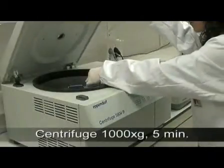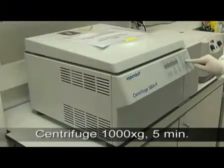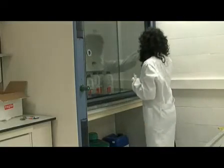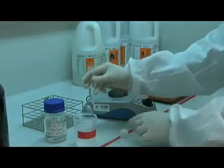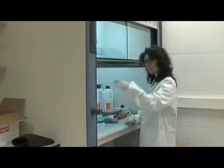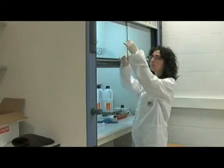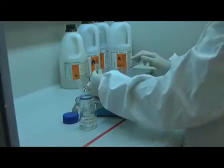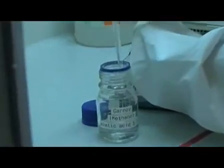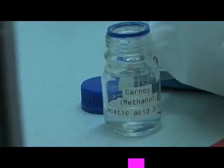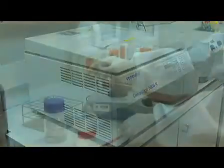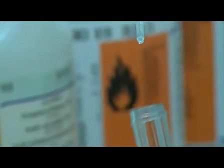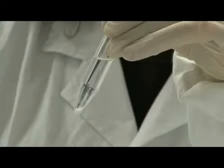And then the sample must be centrifuged again. Centrifugation causes the spermatozoa to collect at the bottom of the tube, allowing us to replace the hypertonic solution with the methanol acetic acid. Centrifugation must be repeated to change the methanol acetic acid as many times as is necessary to obtain a white pellet.